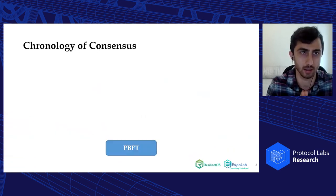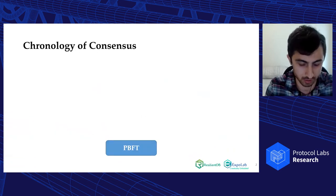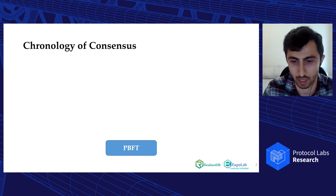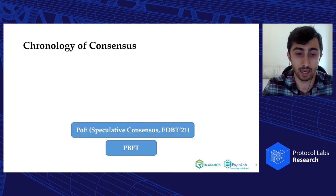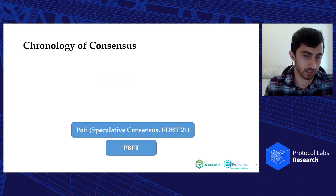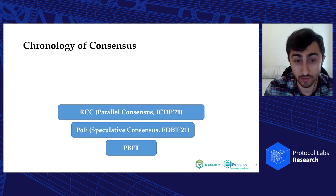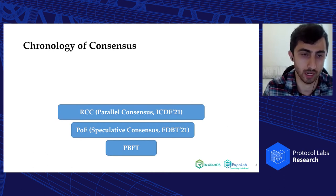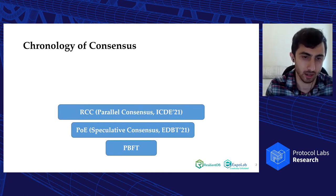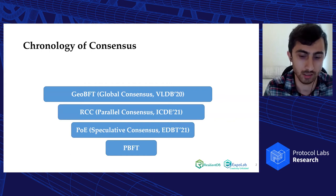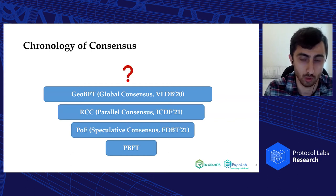Let me give a little background and chronology of consensus. The first practical Byzantine consensus protocol was PBFT, which relies on three phases of communication and came out in 1999. We tried to use speculative execution to reduce a phase in our previous work called PoE. After that, we moved to a scalability filter by parallelizing consensus with our RCC protocol. Next, we did GOVFT to scale even further with a global consensus. The question would be: what is the next step?